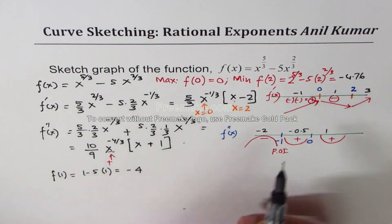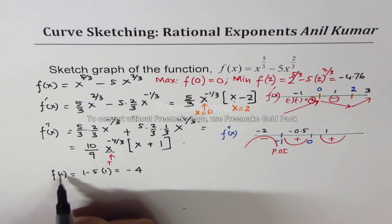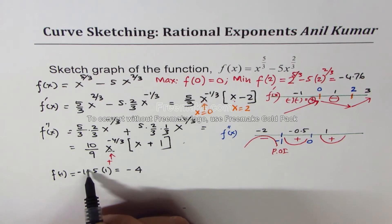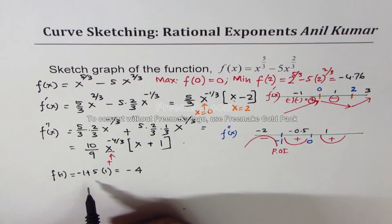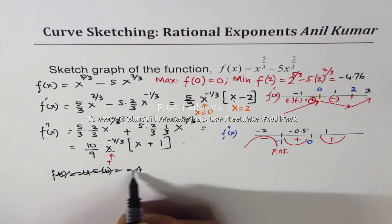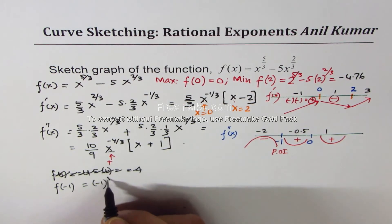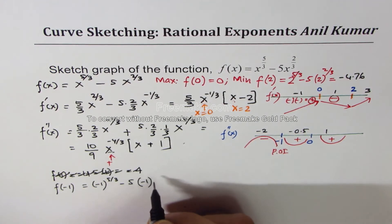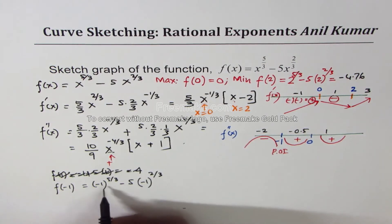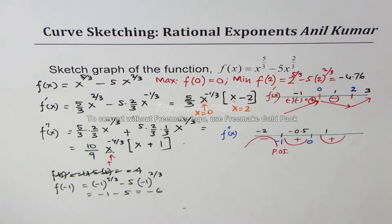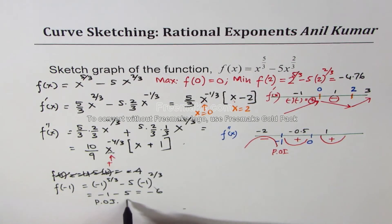Correcting the calculation: the inflection point is at x = -1, not x = 1. So we compute f(-1) = (-1)^(5/3) - 5·(-1)^(2/3) = -1 - 5·(1) = -1 - 5 = -6. So the point of inflection is at (-1, -6).